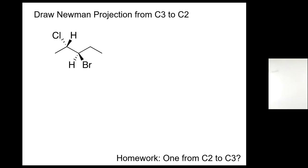Draw the Newman projection of this molecule seeing from the C3 to C2. So what does that mean? I use the staples of Newman projection, but what's the C3 to C2? What that means is C3 is our front carbon. C2 is our back carbon.